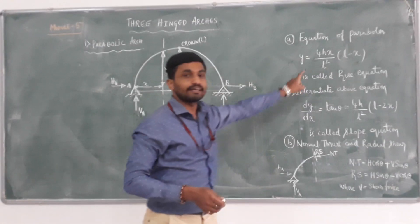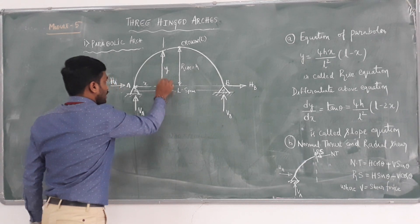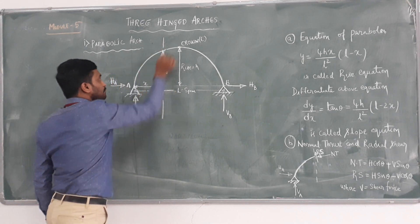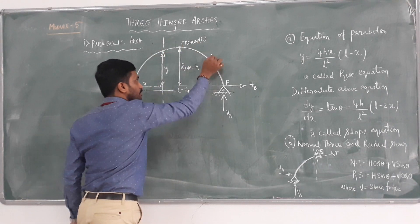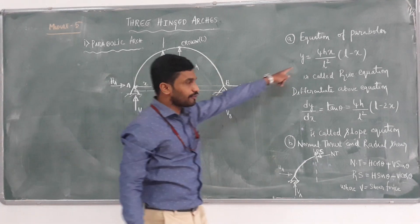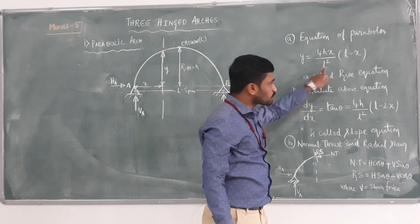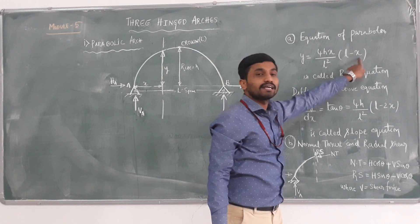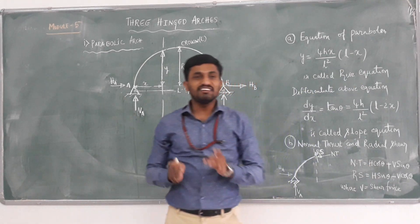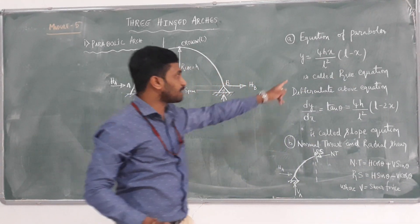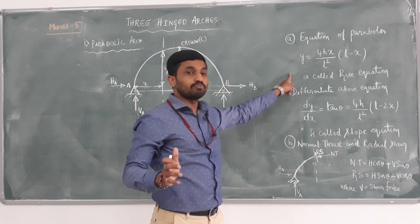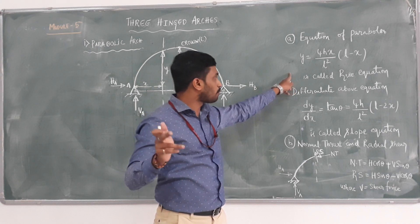This Y indicates the height, the rise of parabola at any point, at any section. If you consider Y value, the equation is 4HX by L square into L minus X. Dear students, please remember that this particular equation is very much important when we are solving problems.